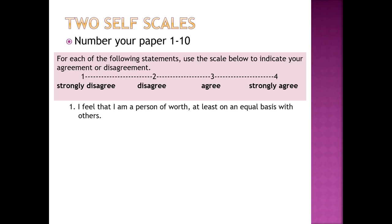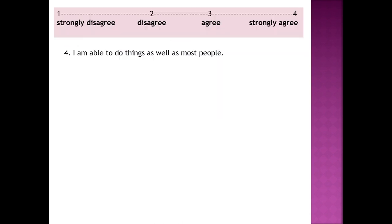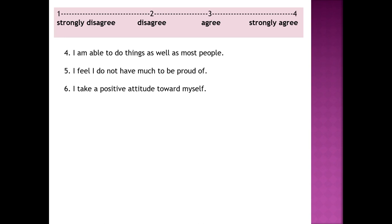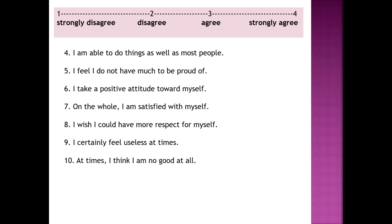Number one: I feel that I am a person of worth at least on an equal basis with others. Number two: I feel that I have a number of good qualities. Number three: all in all, I am inclined to feel that I am a failure. You can always pause me if you need to reflect. Number four: I am able to do things as well as most people. Five: I do not have much to be proud of. Six: I take a positive attitude toward myself. Seven: on the whole, I am satisfied with myself. Eight: I wish I could have more respect for myself. Nine: I certainly feel useless at times. Ten: at times, I think I am no good at all.